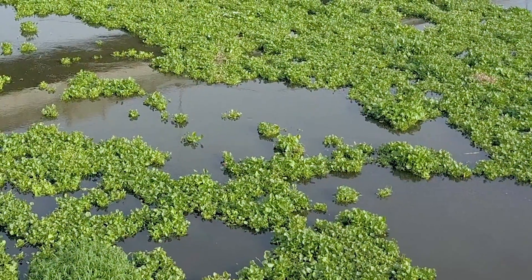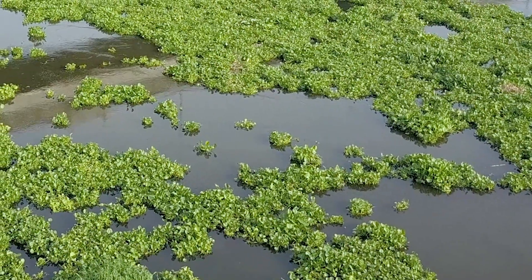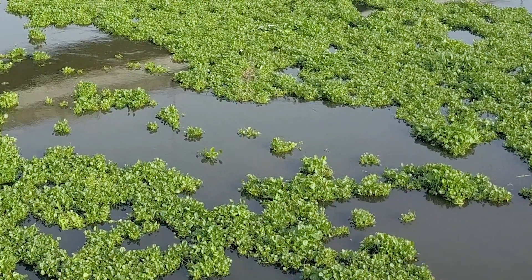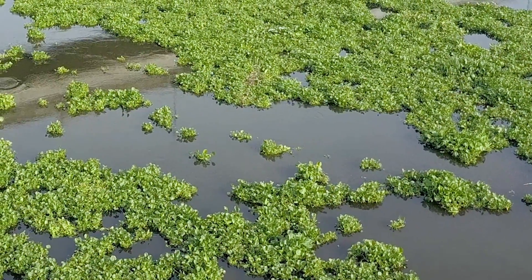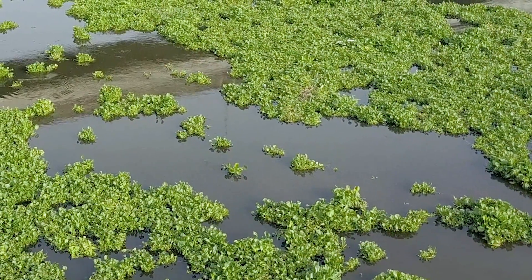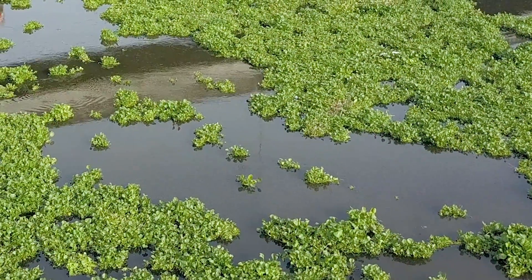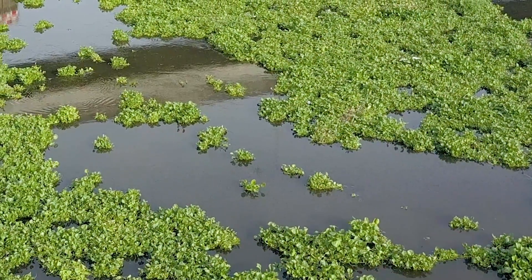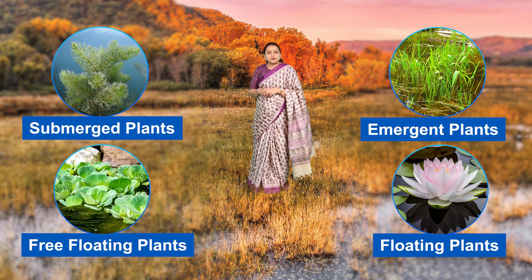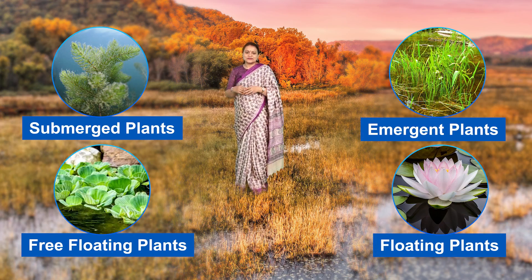The fourth category is free floating plants. These plants float freely on the water surface. The entire plant is suspended on the water, allowing the plant to be moved around the pond by wind and water currents. Examples of such plants are duckweed and water hyacinth. These were the four categories of plants found in wetlands.